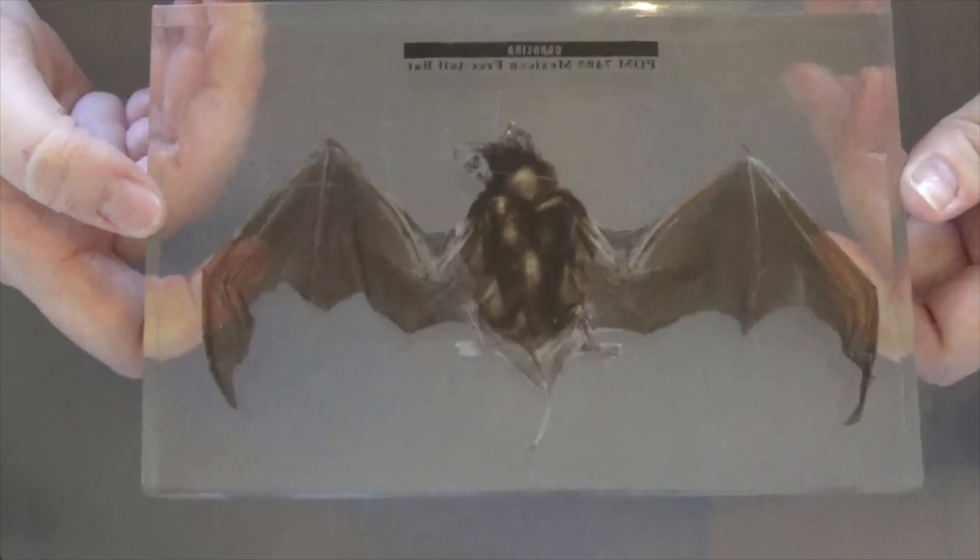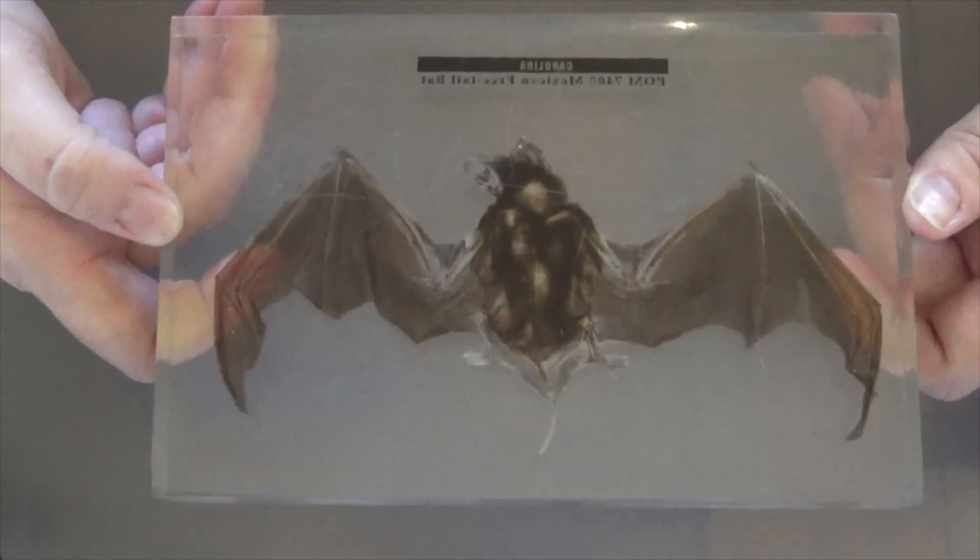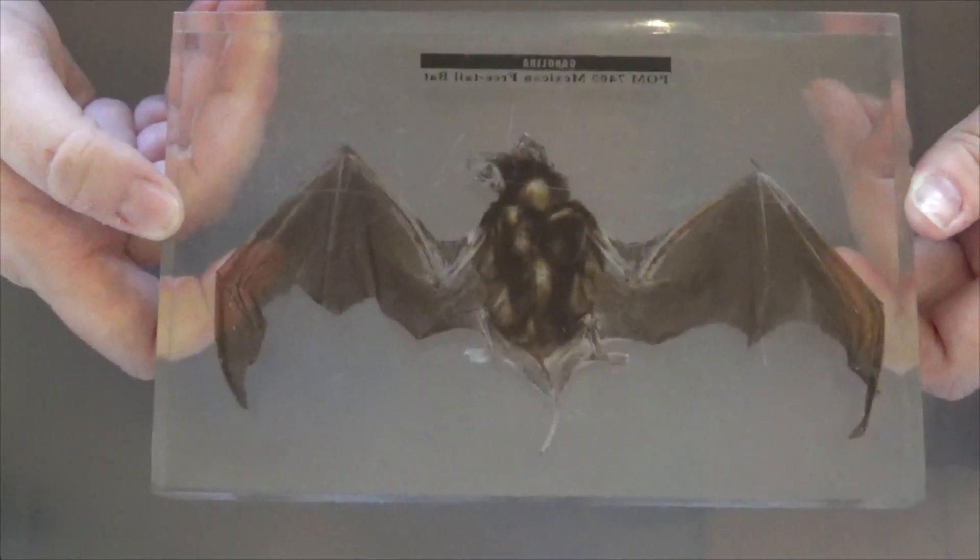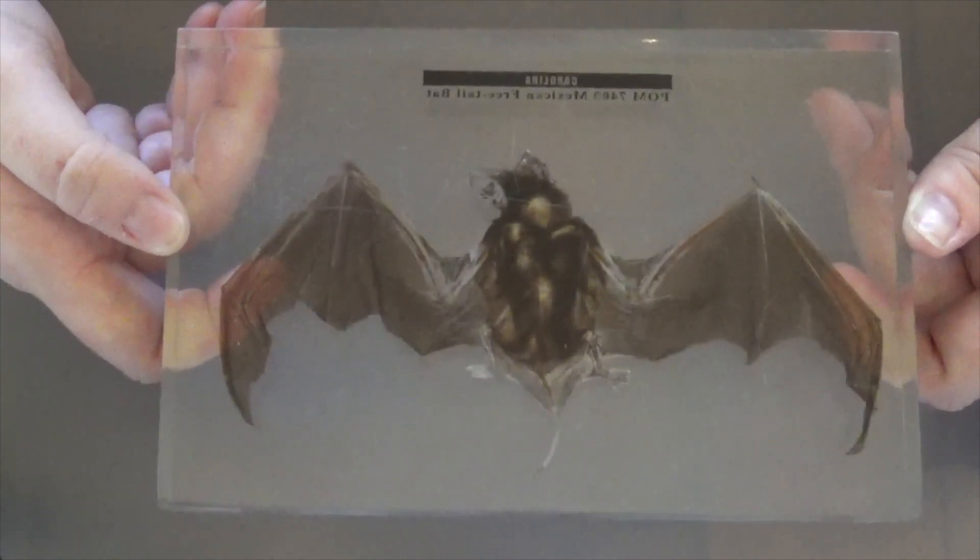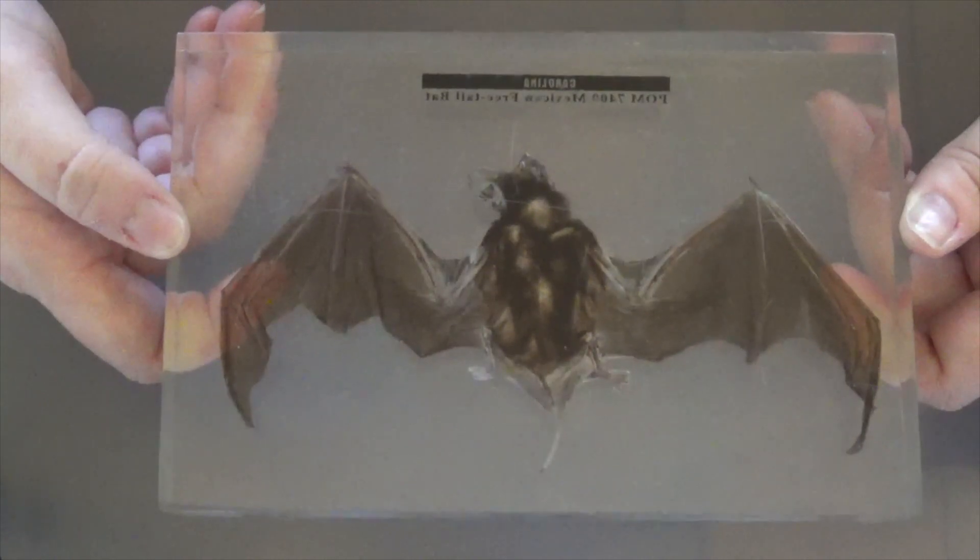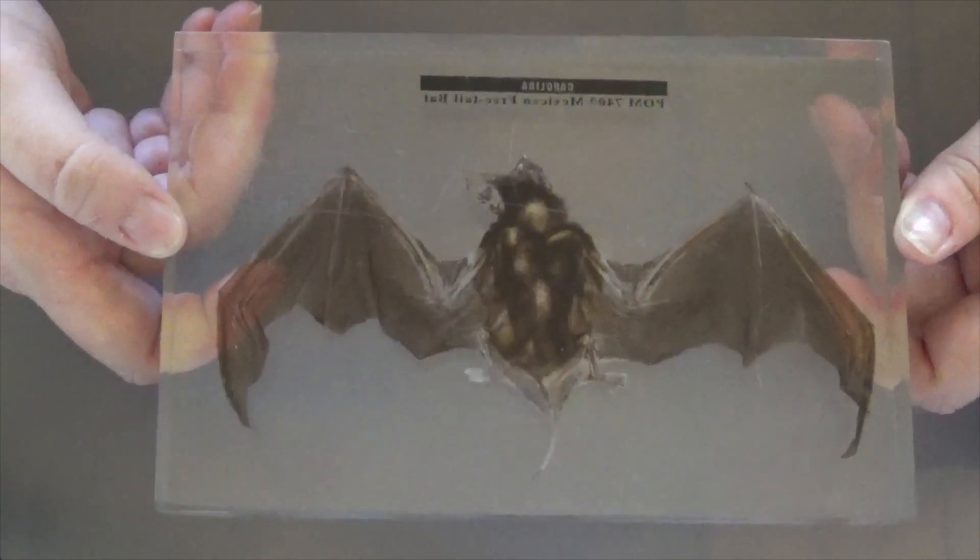Unfortunately, one kind of sad thing about bats is that a lot of bats are endangered. In fact, 13 different types of bats just in the United States are endangered. And that means that there are less and less of them in the wild all the time.